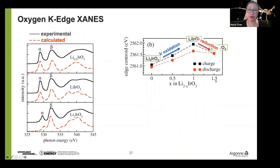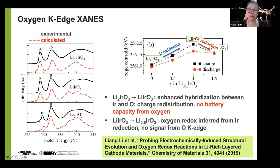More accurate calculations and the electronic structure also show that there is not much change in the last stage. Additional information from iridium XANES shows initial iridium oxidation from fully lithiated to half-delithiated, and then iridium reduction in the last stage. Our conclusion is that in the initial part of charge there is enhanced hybridization between iridium and oxygen — essentially charge redistribution — with no additional capacity from oxygen. In the final stage, oxygen redox is inferred only from iridium reduction, but there is no observable change in the oxygen K-edge XANES, casting doubt on the previous study.